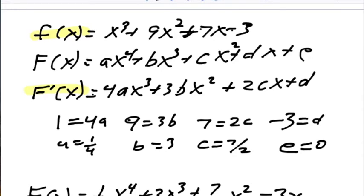And so my capital F of x is 1 fourth x to the fourth plus 3x cubed plus 7 halves x squared minus 3x and my integral from 1 to 5 of little f of x dx is going to be capital F of 5 minus capital F of 1.